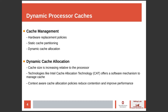Over the years, the size of cache is increasing relative to the processor. There is an opportunity to manage these larger caches dynamically with software-driven approaches. Intel's cache allocation technology, CAT, offers a software mechanism to manage cache so that context-aware cache allocation policies are possible. Such policies can reduce cache contention and improve performance.